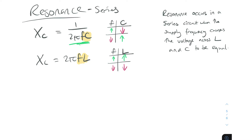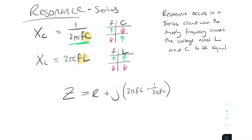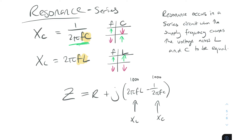Eventually these two points actually meet and become equal, and at this point the imaginary term of impedance cancels out. So Z for impedance is equal to R plus j(2πfL − 1/2πfC). This is XL, the reactance of the inductor, and this is XC, the reactance of the capacitor. When they become equal — say both are 1000 — they cancel each other out and this whole bracket becomes 0.